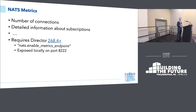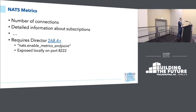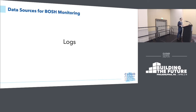Another source of metrics is NATS — the message bus also has a feature to provide metrics. By default it's disabled, but with recent versions of BOSH director you can enable this feature. It's exposed locally on port 8222 on the director VM. These metrics are very helpful with BOSH DNS. When we introduced BOSH DNS to our production, we experienced issues because BOSH DNS puts quite a large load on the message bus. These metrics were very useful to analyze those issues, and you can also use them for other issues.